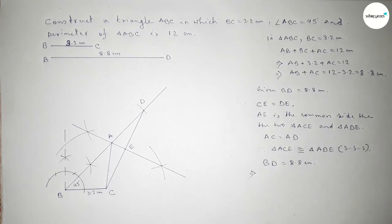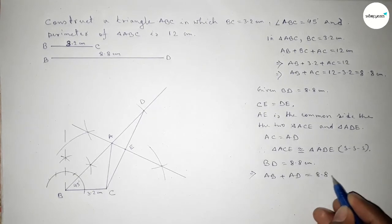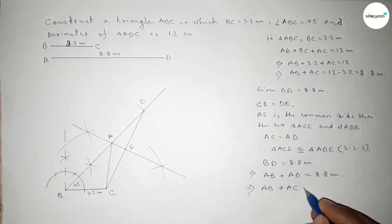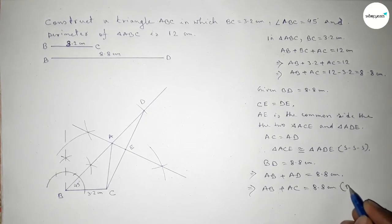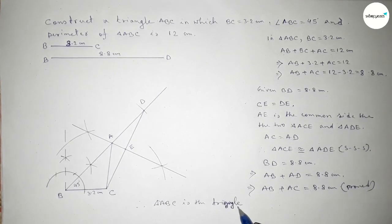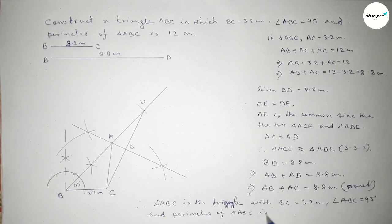We can write BD equals AB plus AD equals 8.8 centimeters. Since AC equals AD, we get AB plus AC equals 8.8 centimeters. Therefore triangle ABC has BC equal to 3.2 centimeters, angle ABC equal to 45 degrees, and the perimeter of the triangle equal to 12 centimeters. That's all — thanks for watching, please share it.